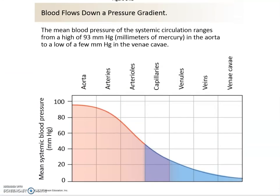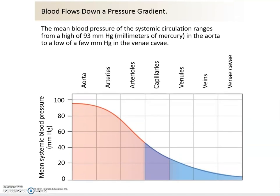Blood flow goes down a pressure gradient, starting with the highest average pressure — the mean arterial pressure. In the aorta, just leaving the left ventricle, you have the highest average pressure, listed here at 93 millimeters of mercury. That number comes from a formula that calculates the average pressure in the aorta.